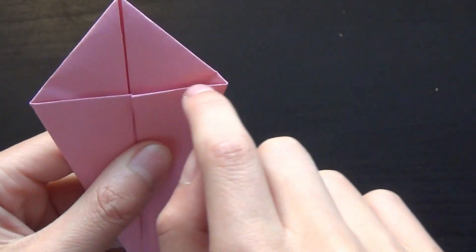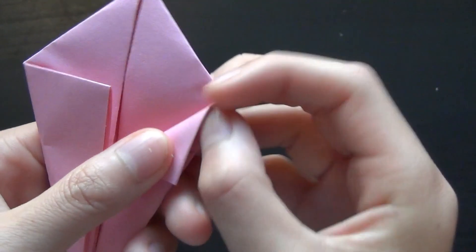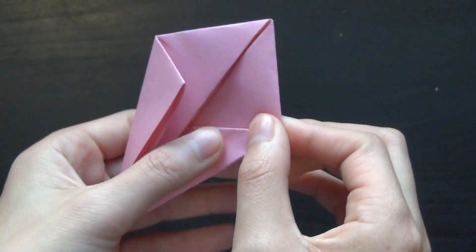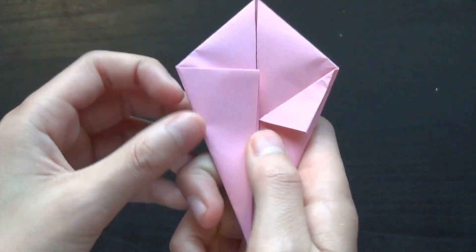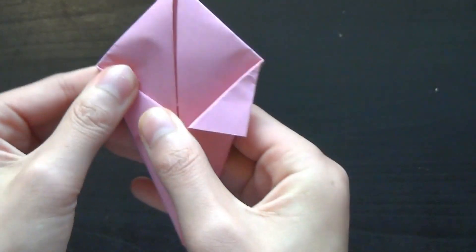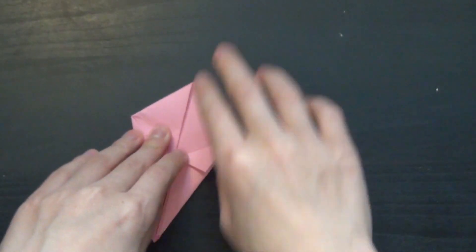Now you want to take this side and fold it to the edge right here, and fold this side to this side. Then flatten every crease out.